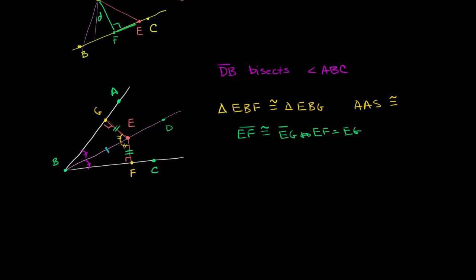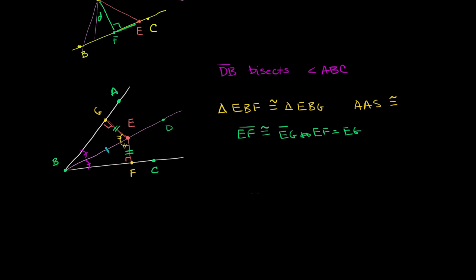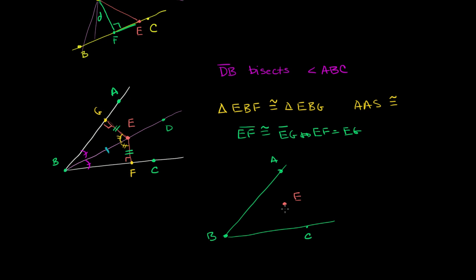Now let's go the other way around. Let me draw another angle right over here. Let's call this A, B, and C. And let's pick some arbitrary point E right over here. Let's say we start off with the assumption that E is equidistant to BC and BA.